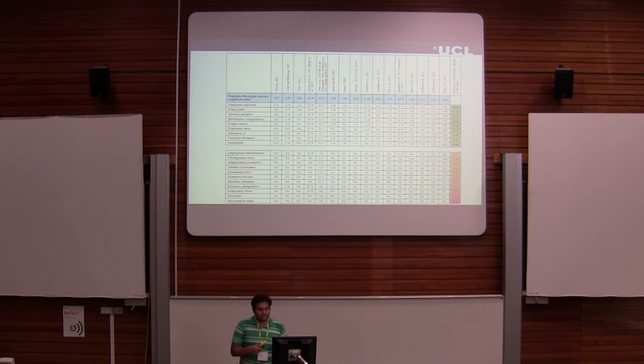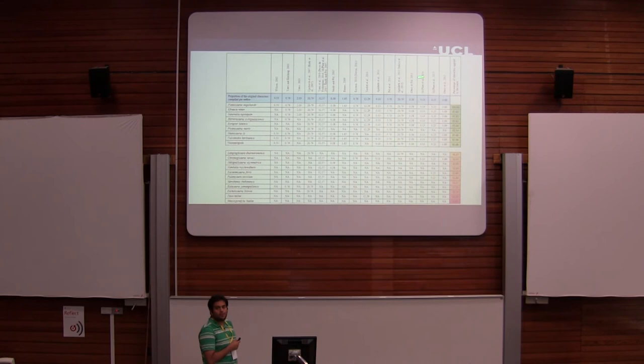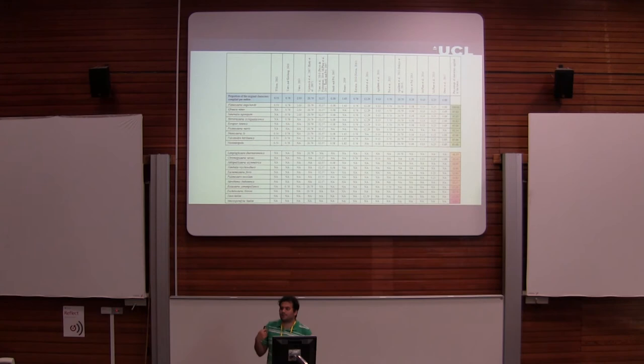The problem is that we are never using the same taxa. What you have here is a table that summarizes the proportion of characters that have been scored for each taxon. Plateosaurus is the only one that has been scored for every single character I have, because it's considered the classic or traditional sauropodomorph — which obviously introduces a bias.